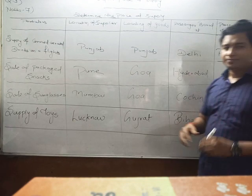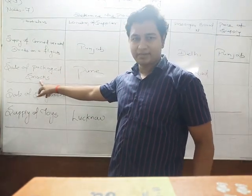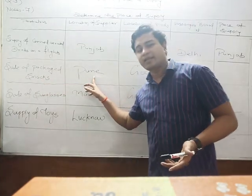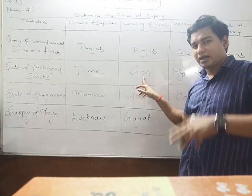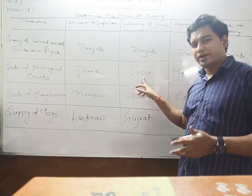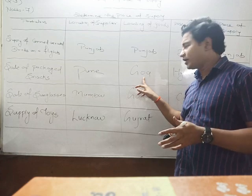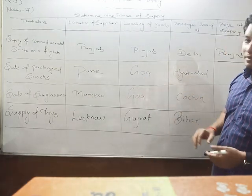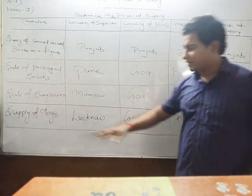Second question: sale of packaged snacks. We are supplying food — it is a supply of goods on a ship, plane, or train. It doesn't matter about other factors. Goa is the place of supply.